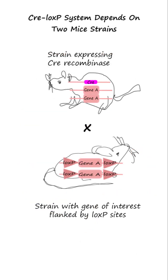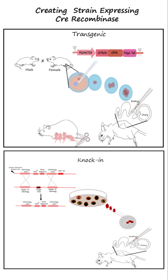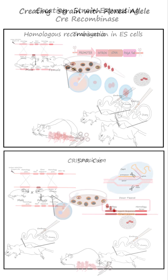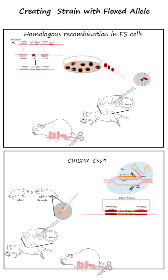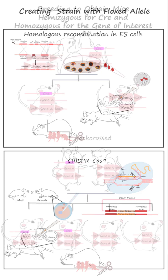The Cre-loxP system relies on two genetically modified strains of the organism. A strain expressing the Cre recombinase may be created by transgenic or knock-in technology. The strain with the floxed allele involves the insertion of loxP sites into the organism's genome via targeted genetic modification.